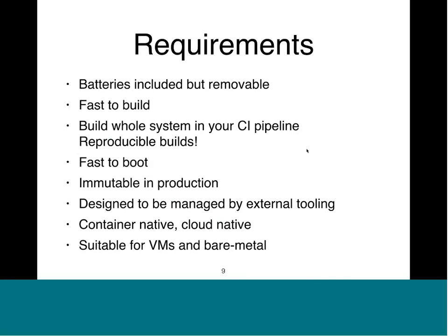It needed to be fast to build because the idea is you want to build your whole Linux operating system in your CI pipeline. As part of that, you want reproducible builds — if you build one image and rebuild it, you want it to be exactly the same as the first time. We also wanted the system to be fast to boot, because it started as a desktop application. And as already said, we wanted it immutable in production for maintainability.